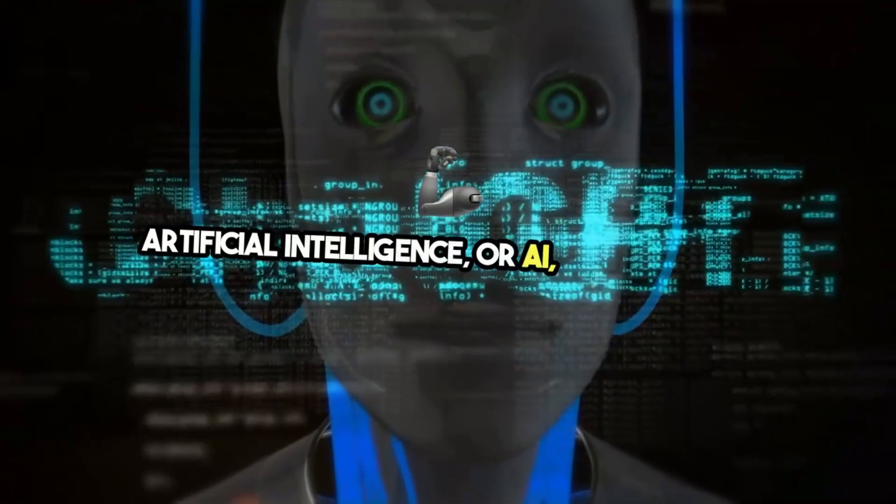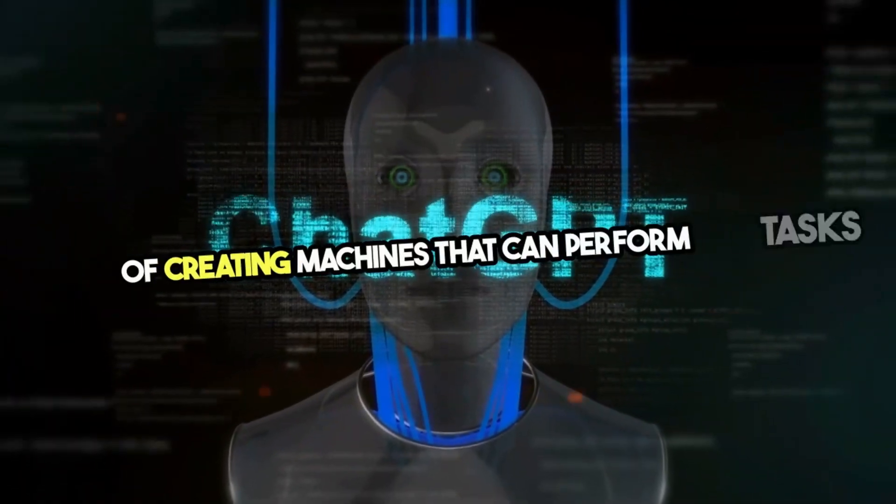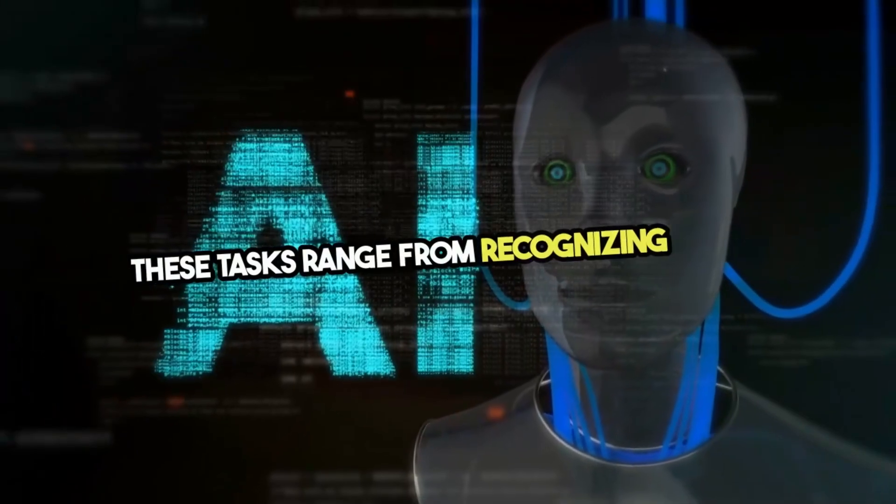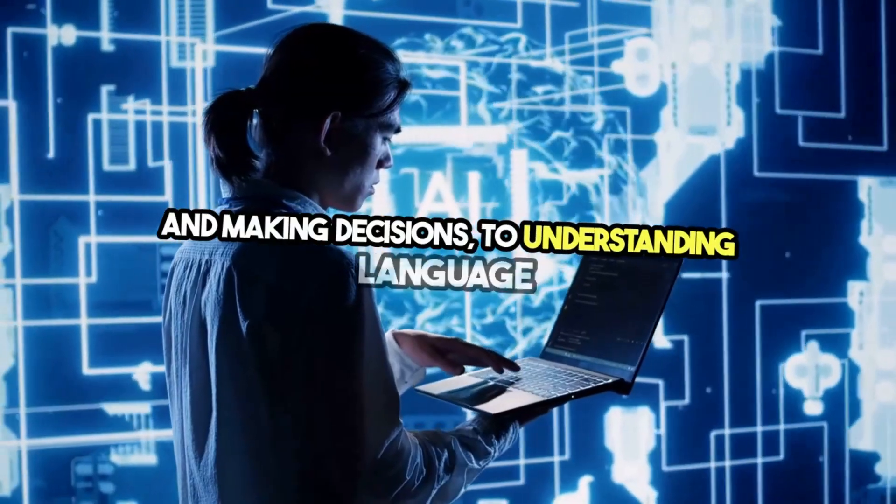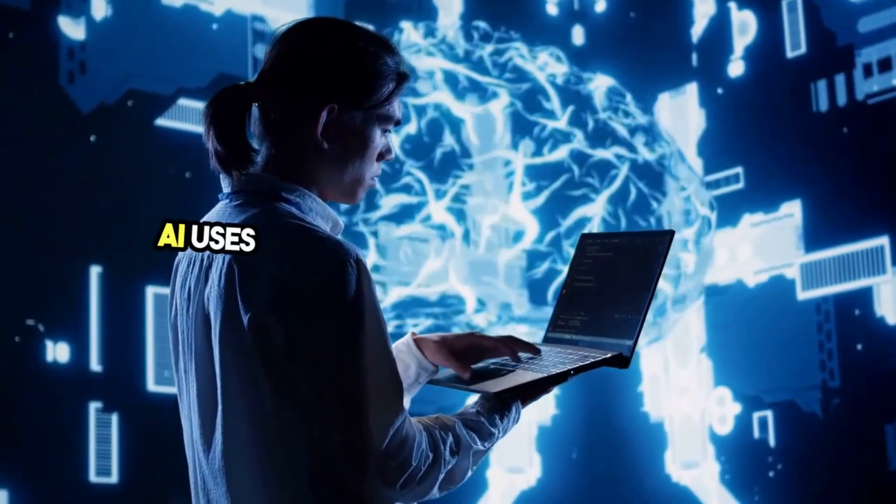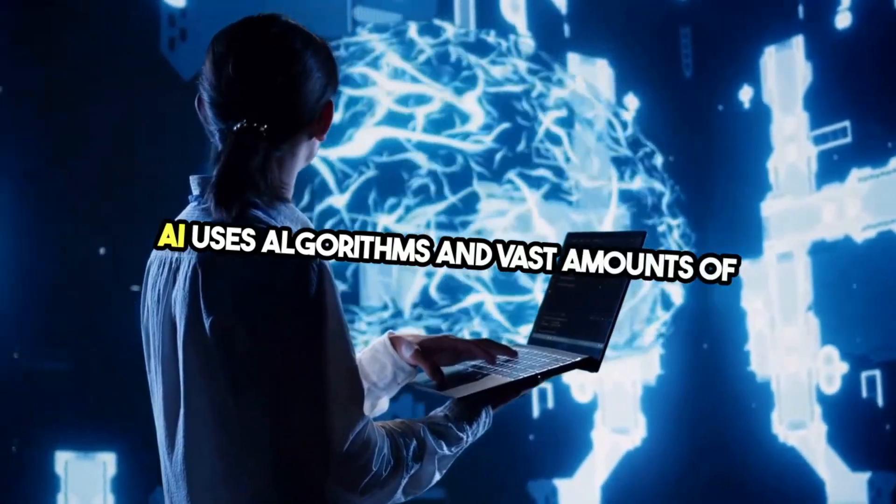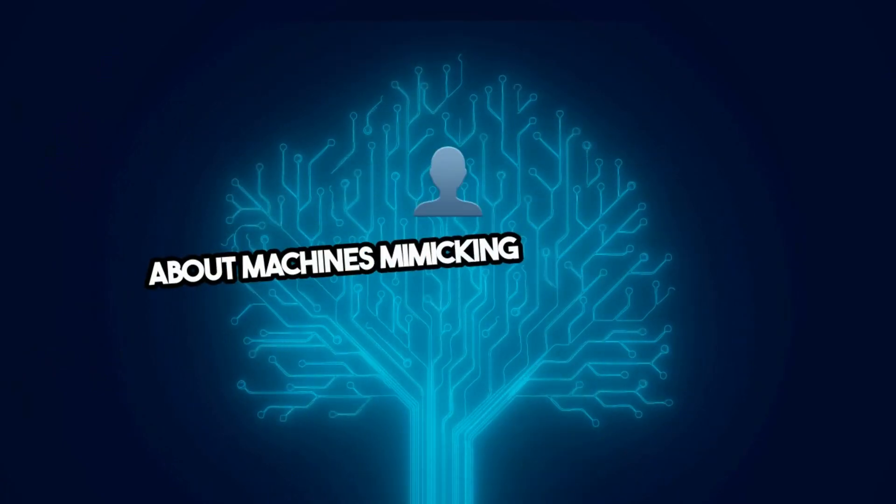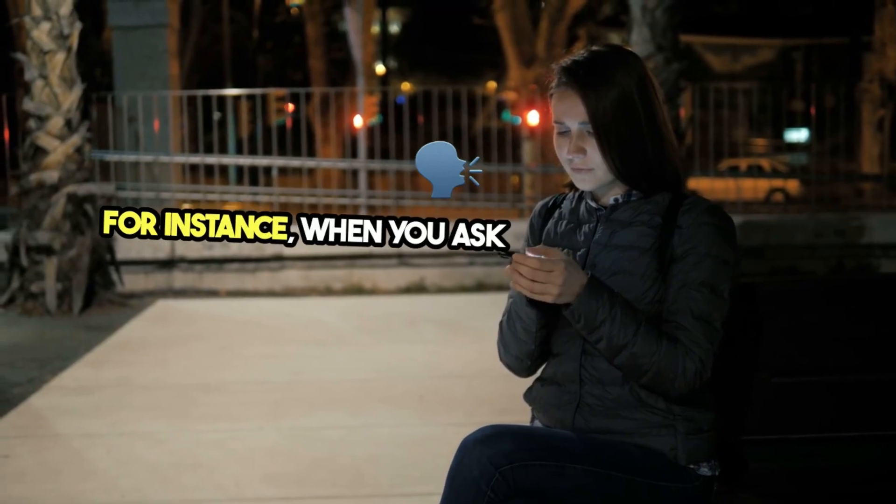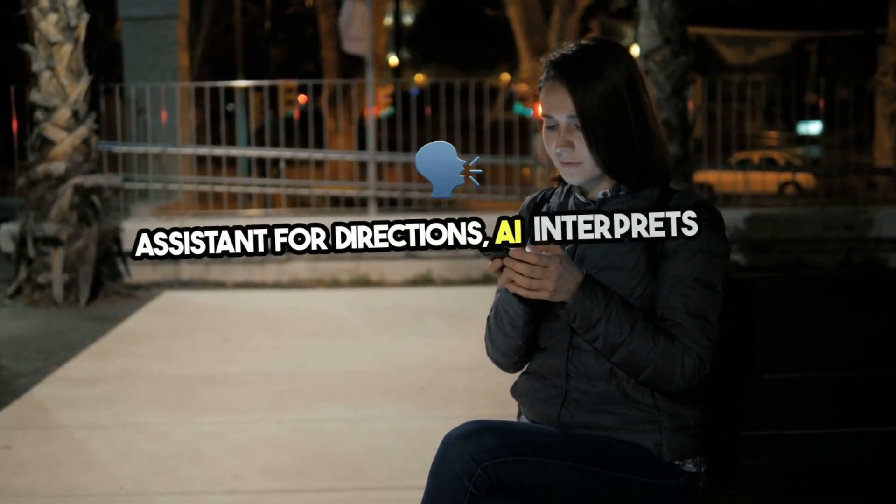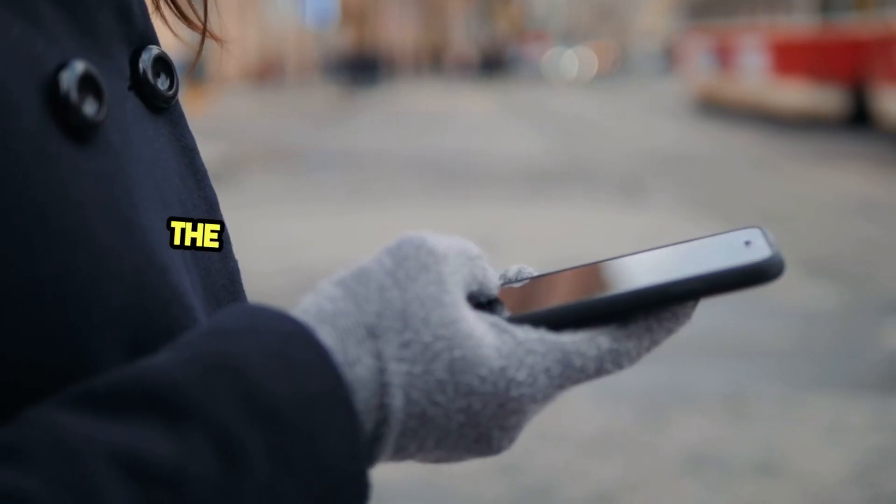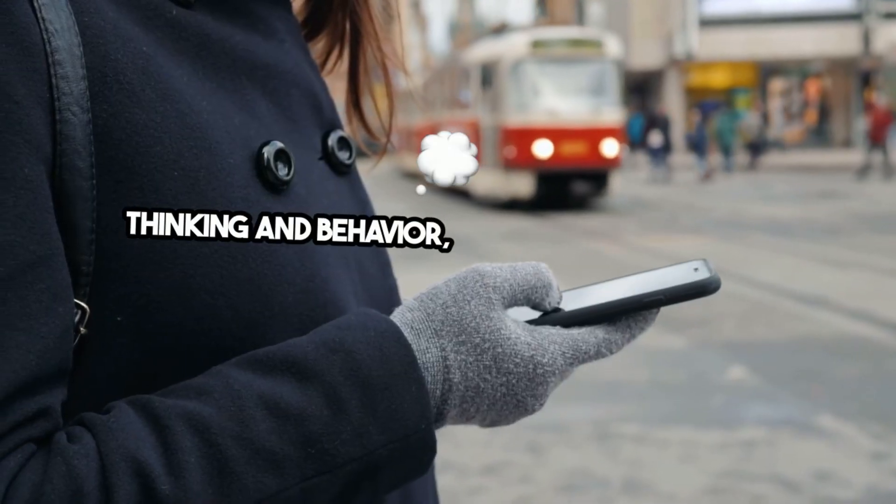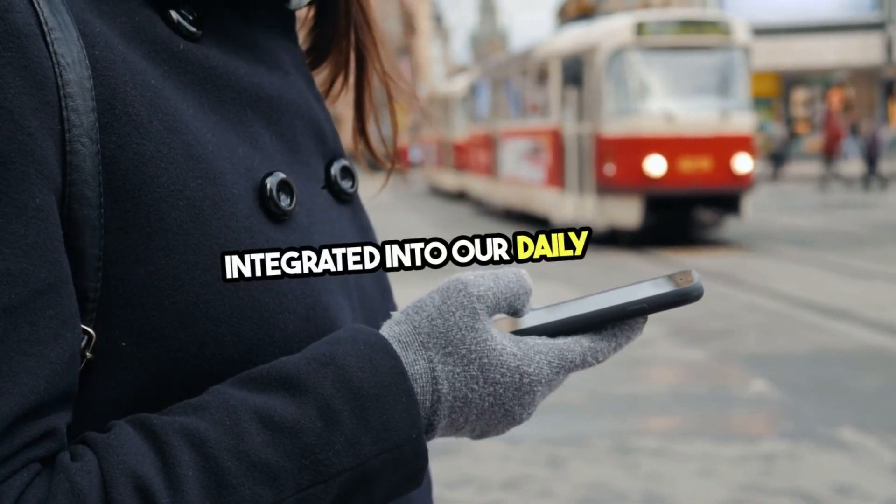Artificial Intelligence, or AI, is the science of creating machines that can perform tasks that typically require human intelligence. These tasks range from recognizing speech and making decisions to understanding language and even driving cars. AI uses algorithms and vast amounts of data to learn and improve over time. At its core, AI is all about machines mimicking human abilities. For instance, when you ask your smartphone's voice assistant for directions, AI interprets your voice, processes the request, and gives you a response. These systems are designed to simulate human thinking and behavior, and they're becoming increasingly integrated into our daily lives.